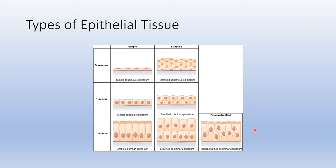There is an exception: pseudo-stratified columnar cells. Columnar tells you the shape is rectangular. Pseudo means false. These cells are actually only one layer — so technically simple — but the nuclei of the cells are scattered at different levels rather than aligned, so at a glance it looks multi-layered. Some cells are very large at the bottom but get squished at the top, which adds to that appearance. In reality it's only a single layer, so we call it pseudo-stratified.